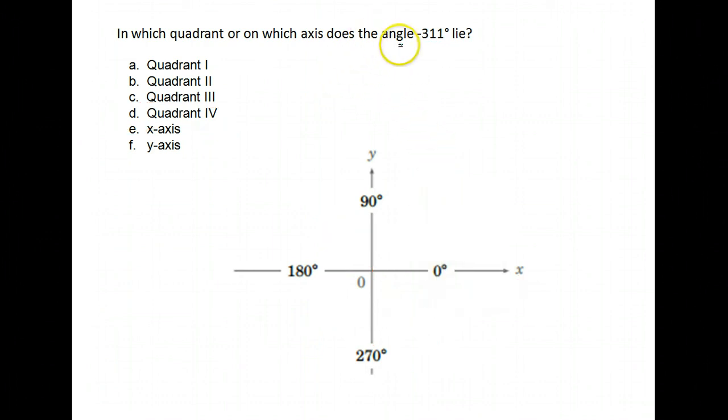In which quadrant does negative 311 lie? Well, negative 311 means it opens downward. So it would go, this is 90 degrees, that's 180 degrees, this is 200 and negative 270. So negative 311 goes the opposite direction, which leaves it ending in the first quadrant.